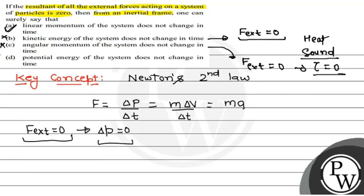Potential energy of the system does not change in time. It's the same as kinetic energy—like heat or sound, there can be energy loss. So, this option is wrong. Therefore, option A is correct. Hope you all get it. Thank you and all the best.